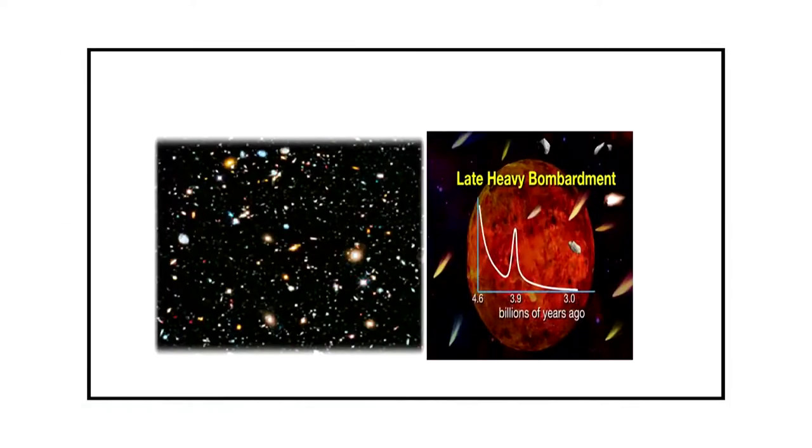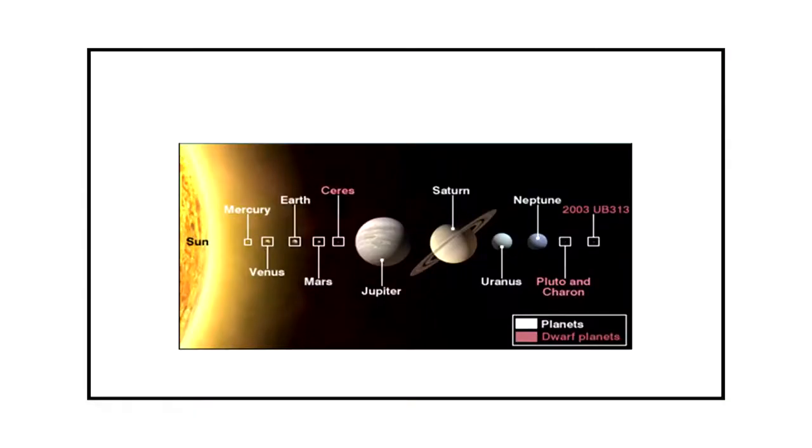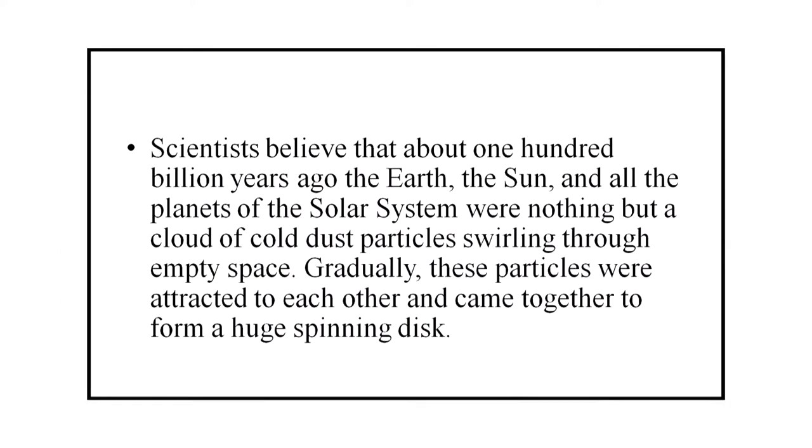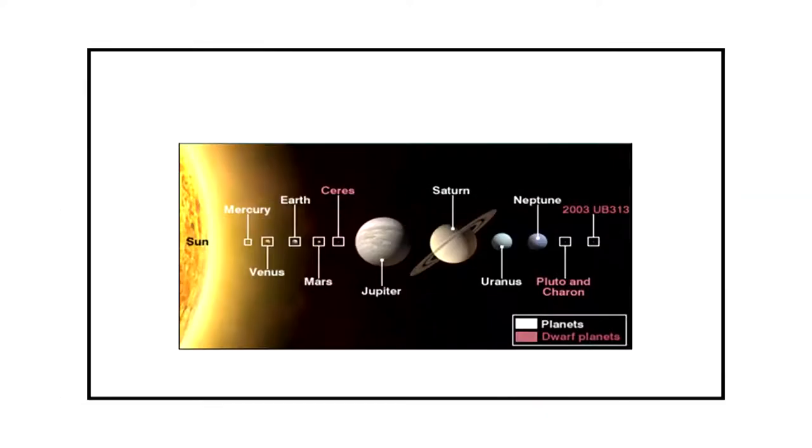This is a picture of origin of Earth. Scientists believe that about 100 billion years ago, the Earth, the sun and all the planets of the solar system were nothing but a cloud of cold dust particles swirling through empty space. Gradually, these particles were attracted to each other and came together to form a huge spinning disk. This is a total figure of planets around the sun.